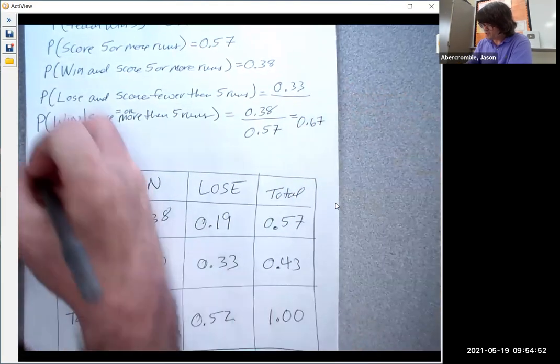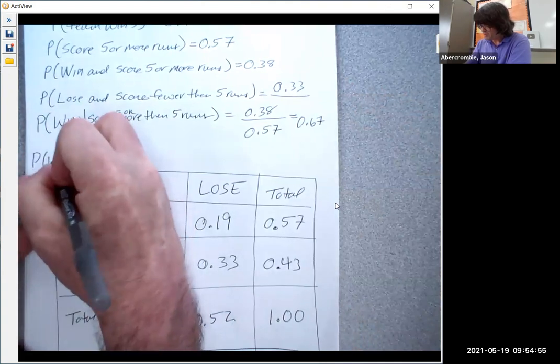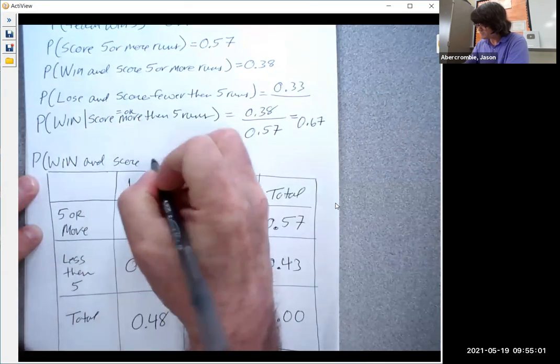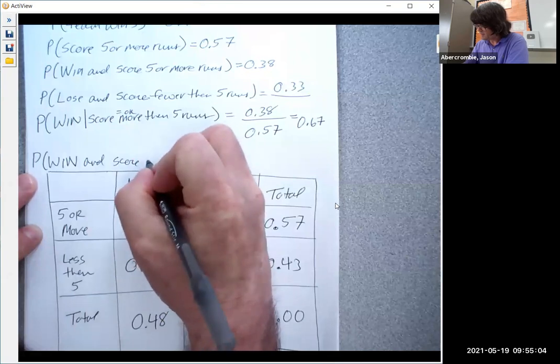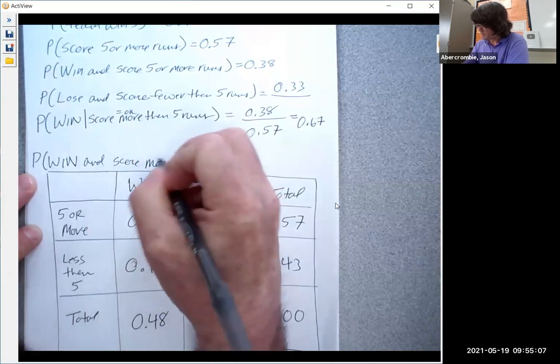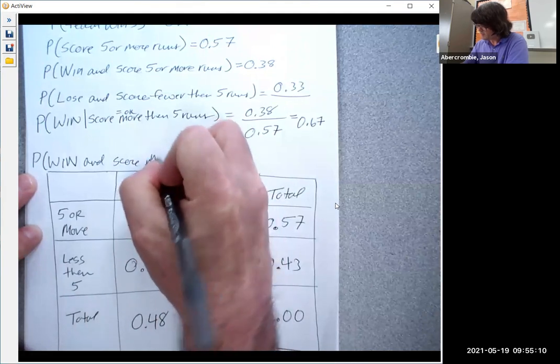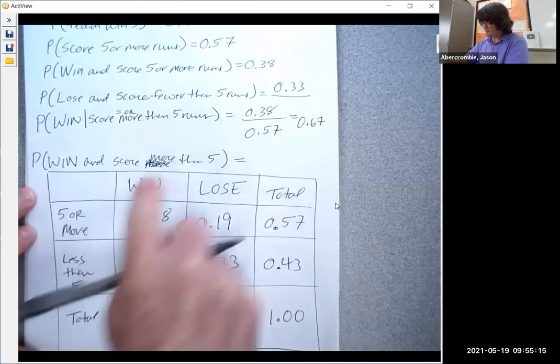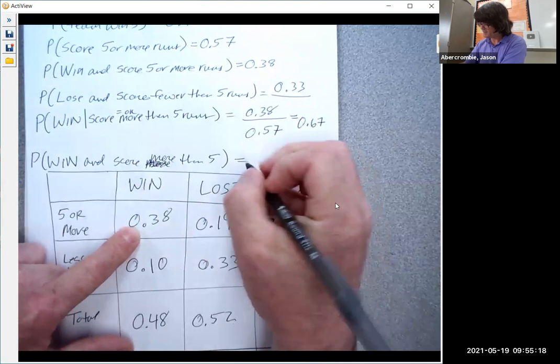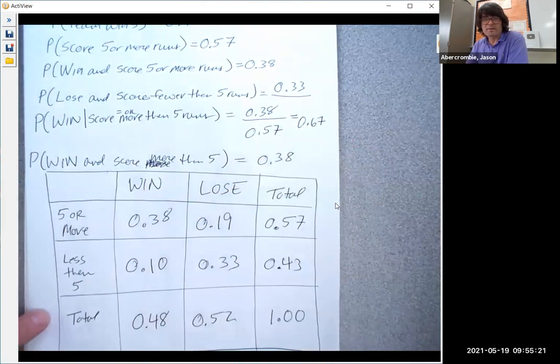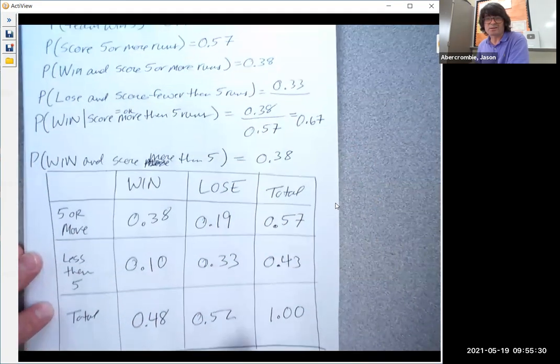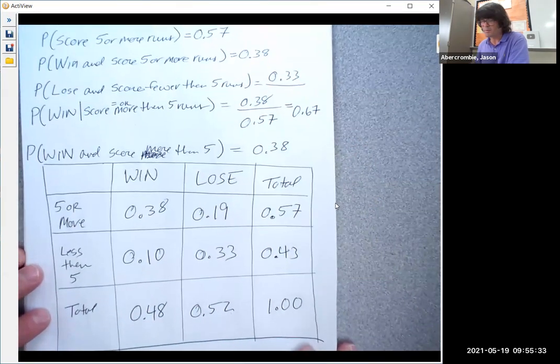You could ask other questions. You could say, what's the chance you win and score more than five? So win and five or more. That's what I meant. It's 0.38, just like that. So anyway, that's how a two-way table works. It's something that you can use to take a confusing word problem and make it put the data in an organized fashion so that you can actually use it and answer your question.